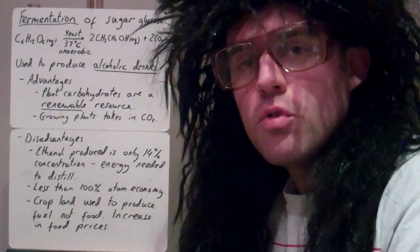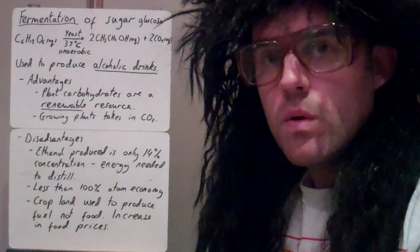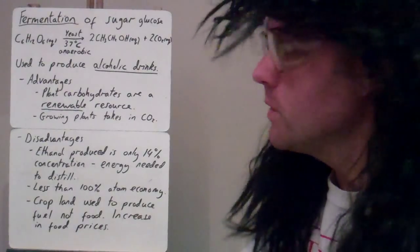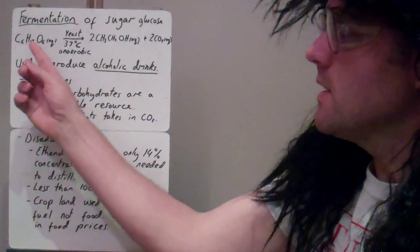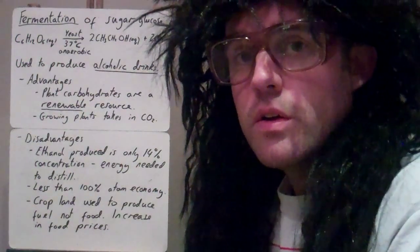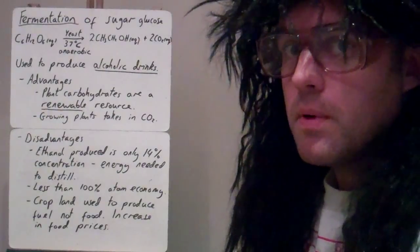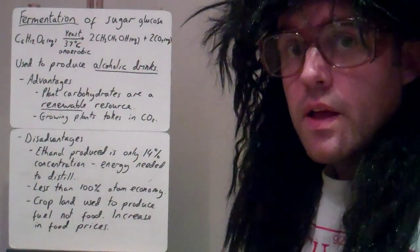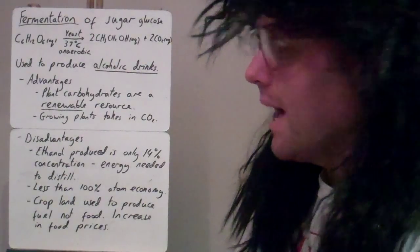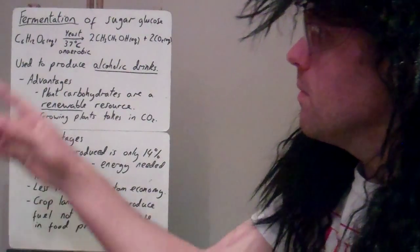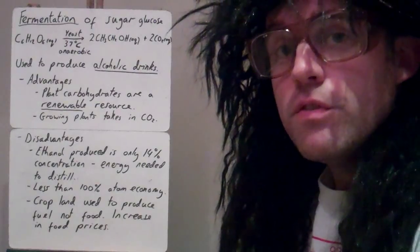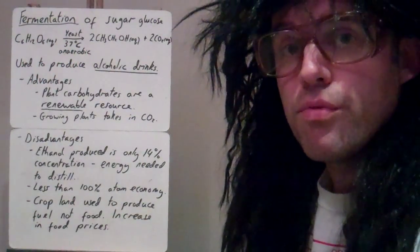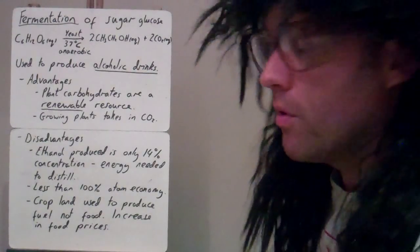There are two industrial ways to produce ethanol. The first one is fermentation of sugar glucose. Here we've got C6H12O6, that's glucose which is taken from plant carbohydrates. We use yeast, which contains enzymes — the biological catalyst of this reaction. The ideal temperature is about 37 degrees centigrade, and it must be in anaerobic conditions, no oxygen present, otherwise we won't make the desired product.